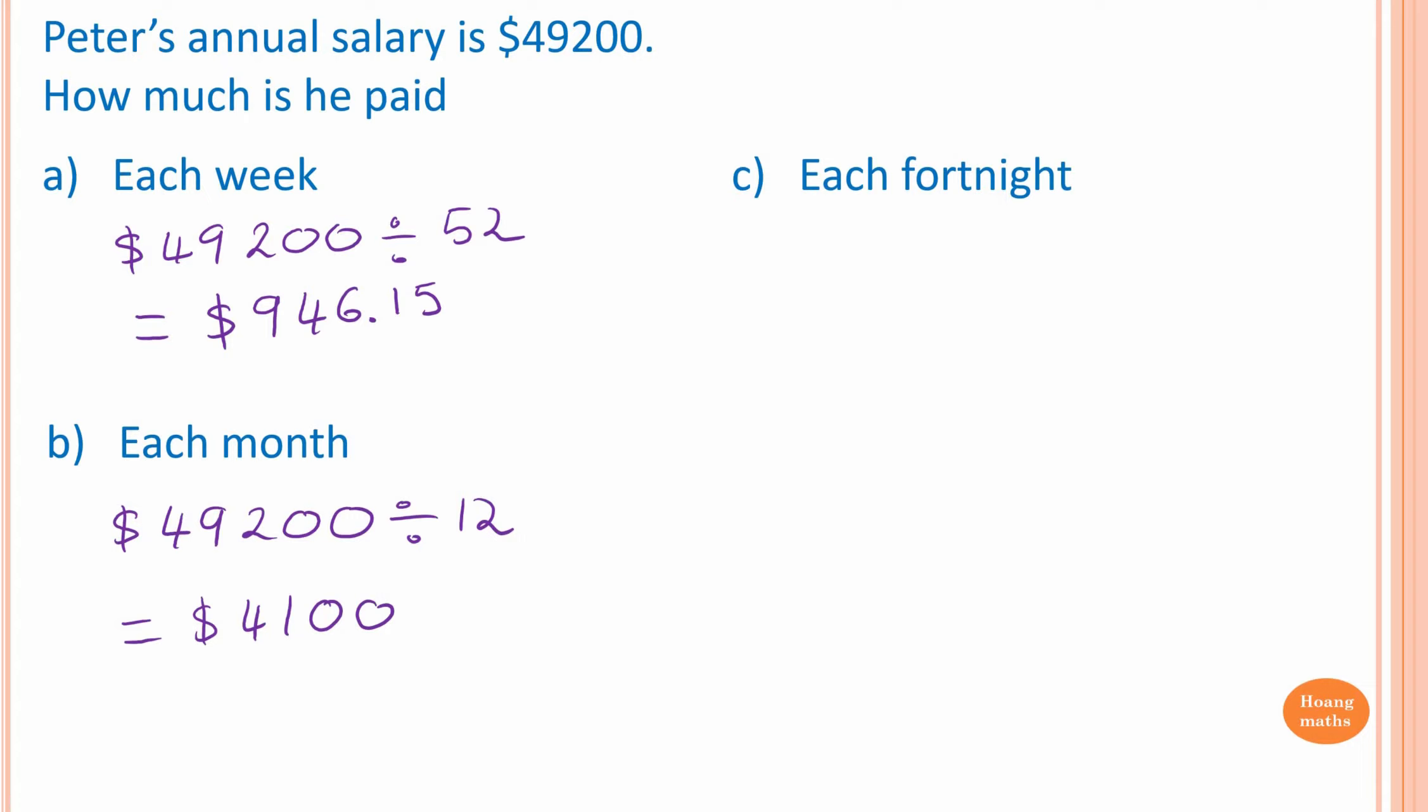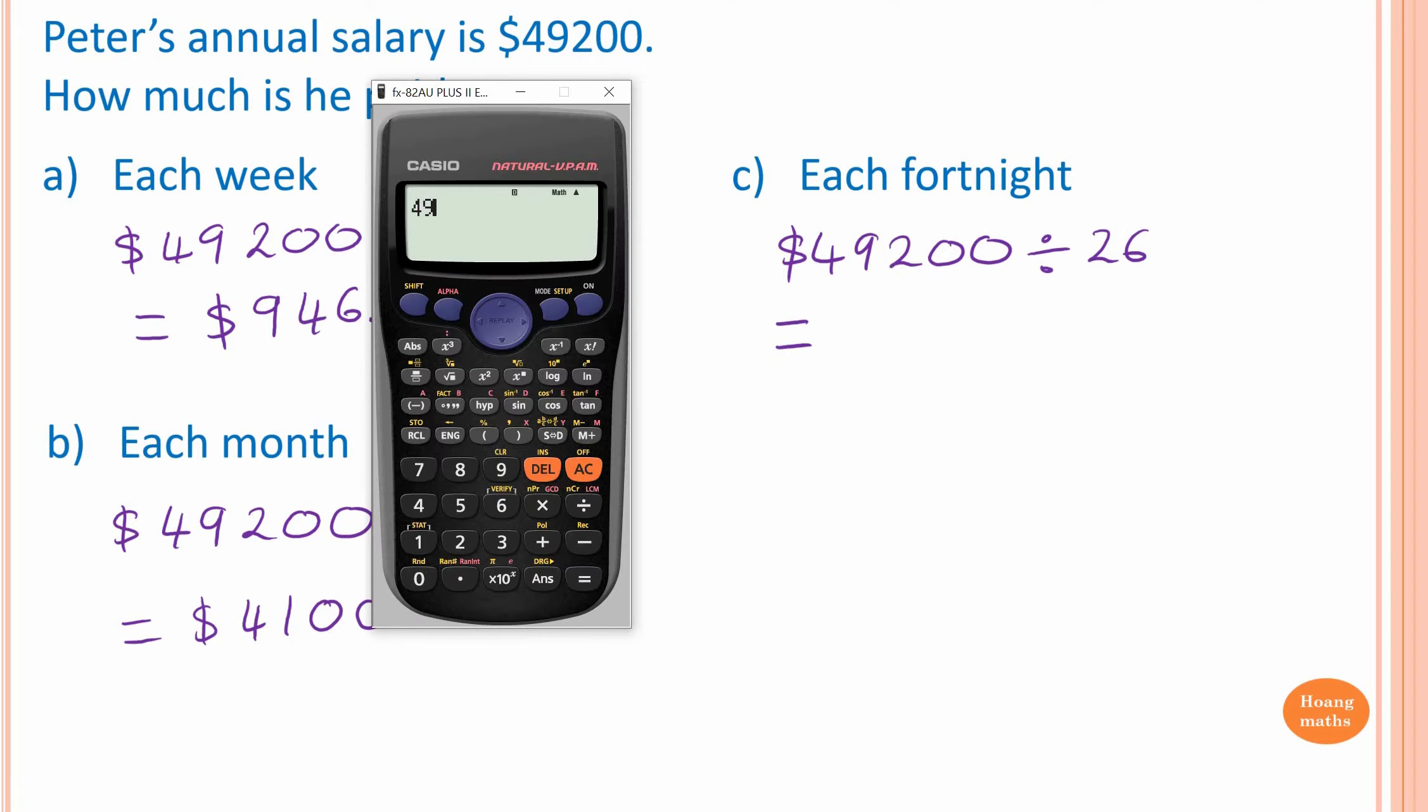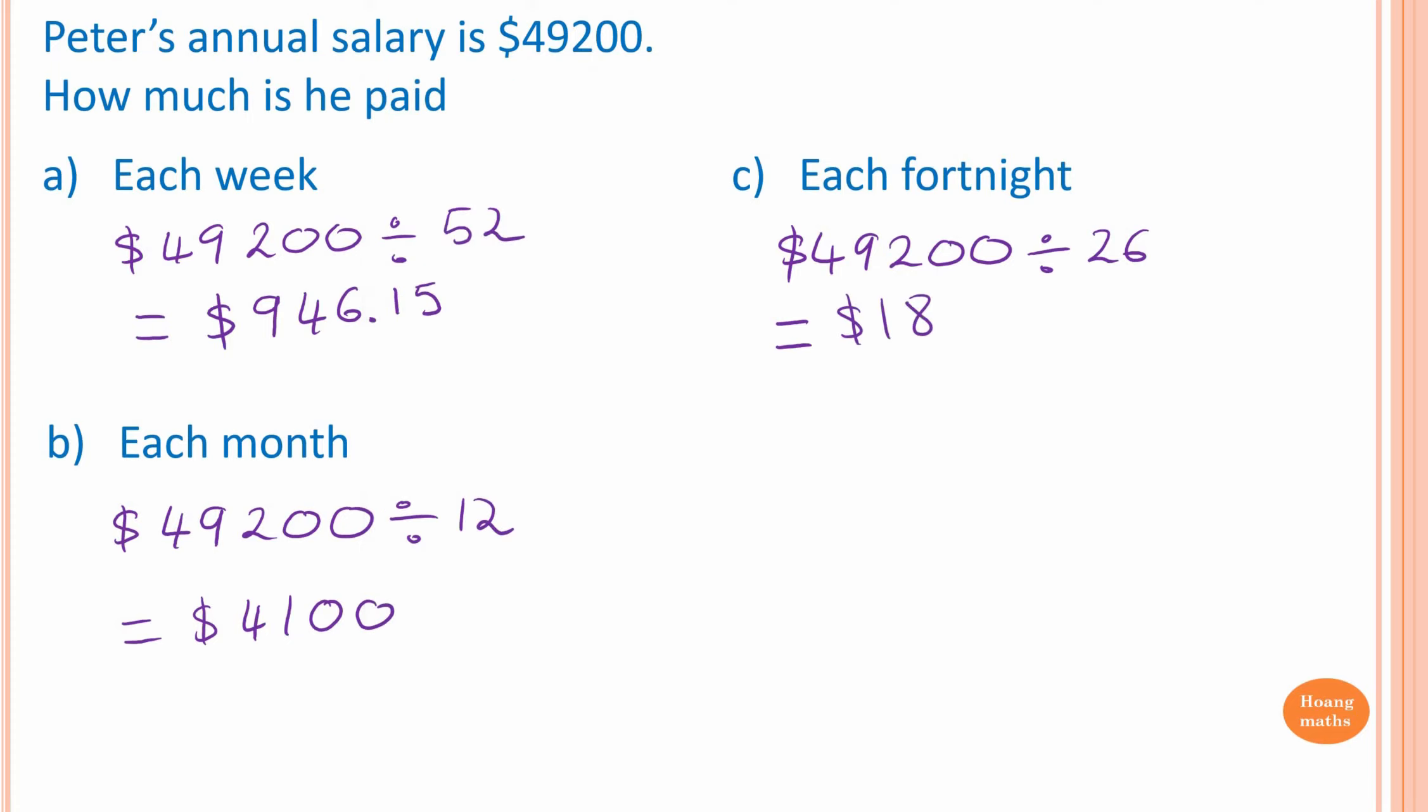Next one, how much is he paid each fortnight? So we know that there are 26 fortnights in a year, so we go $49,200, which equals $49,200 divided by 26. So the answer is $1,892.31.